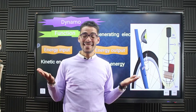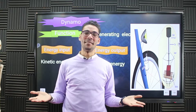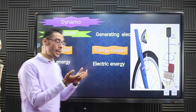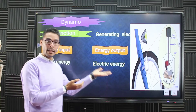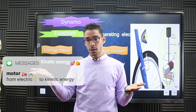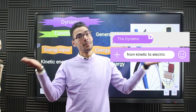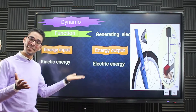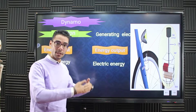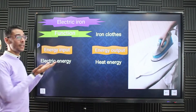The next part is the dynamo. We've talked about the dynamo in previous lessons. The dynamo takes kinetic energy and produces electric energy — it changes kinetic energy into electric energy. The dynamo is the opposite idea of the motor: the motor takes electric energy and converts it into kinetic, but the dynamo does exactly the opposite — it takes kinetic and converts it into electric. So the input energy is kinetic and the output energy is electric.